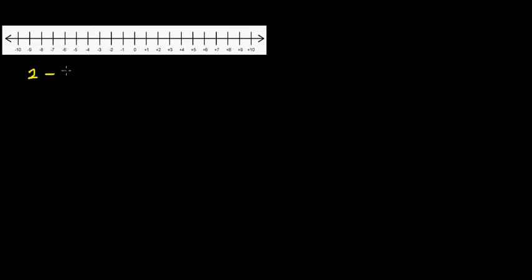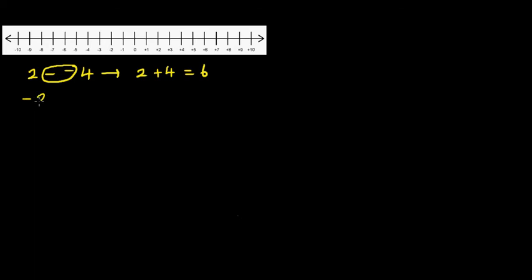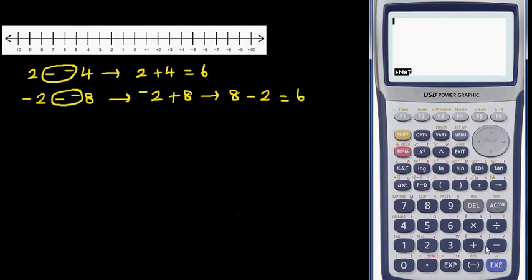Now let's do examples with positives and negatives, or two negatives, or two positives. What if it is two take away minus four? When you're taking away a negative, that means you're adding. So this is the same as two plus four, which is six. Let me show this on a calculator: two take away negative four is positive six. What if it is negative two take away minus eight? Again, taking away a negative means to add, so this is negative two plus eight, which is six.